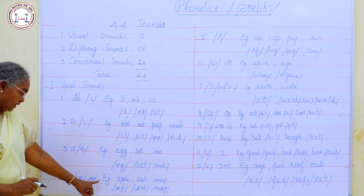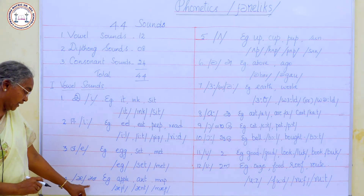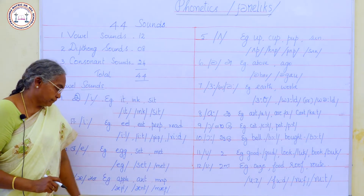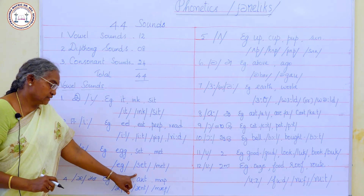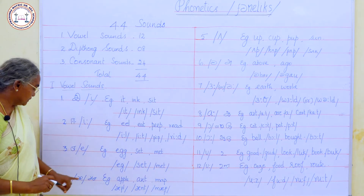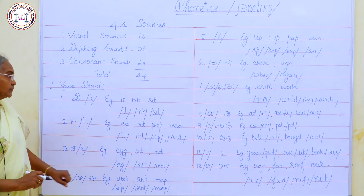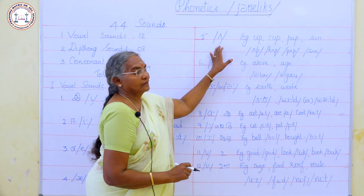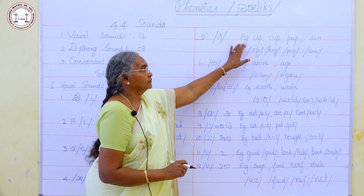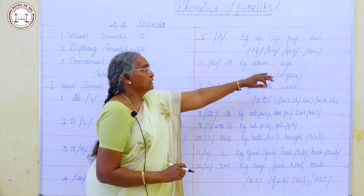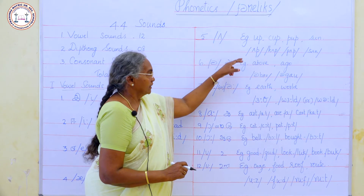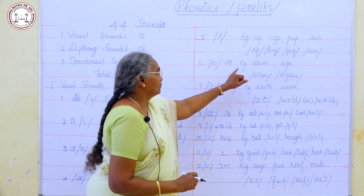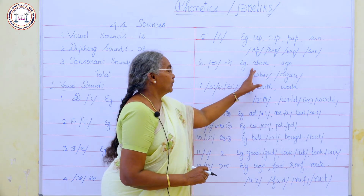The next vowel sound is the short 'ʌ' sound. Examples: up, cup, pup, sun — represented by the ʌ symbol. The sixth vowel sound is the schwa 'ə' sound. Examples: bow, gough, above, ago — all use the schwa ə symbol.